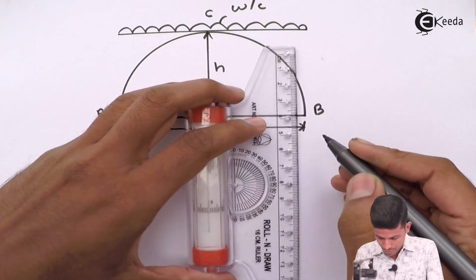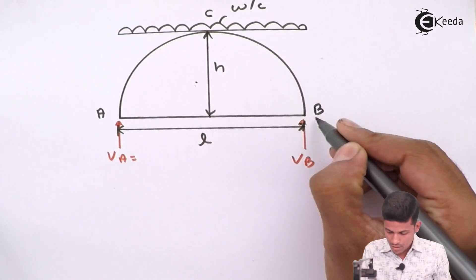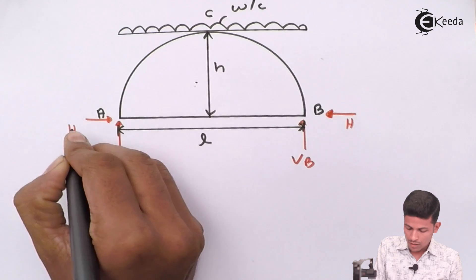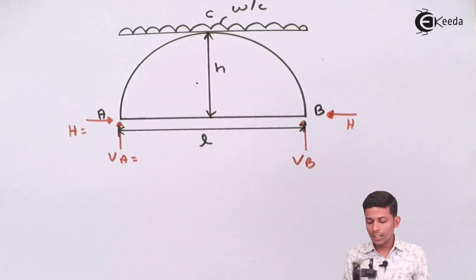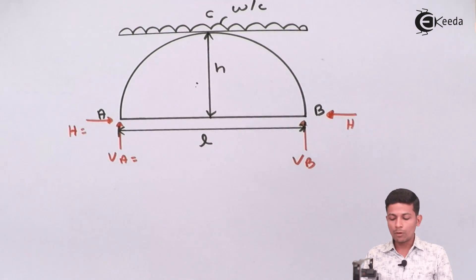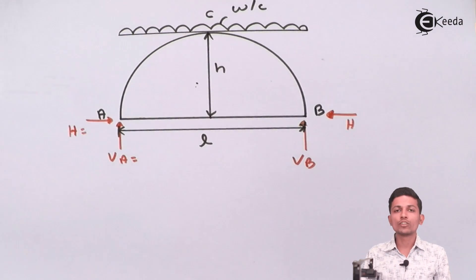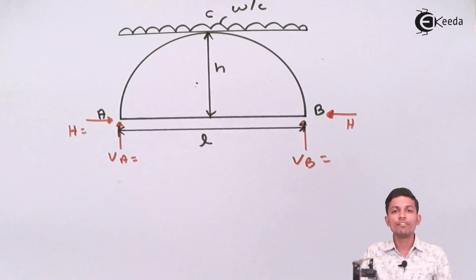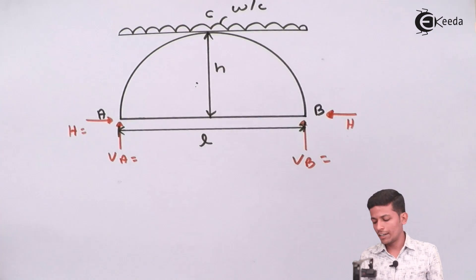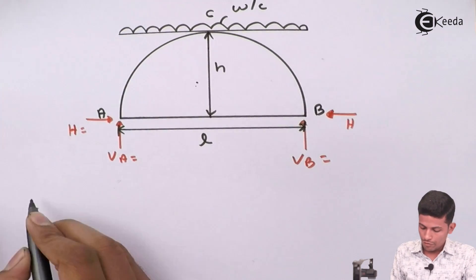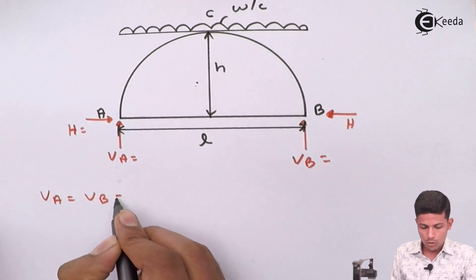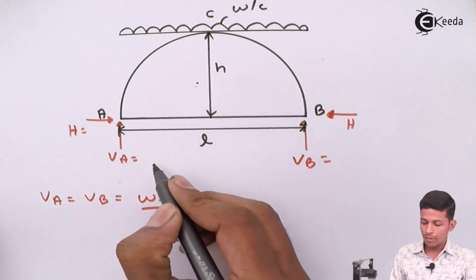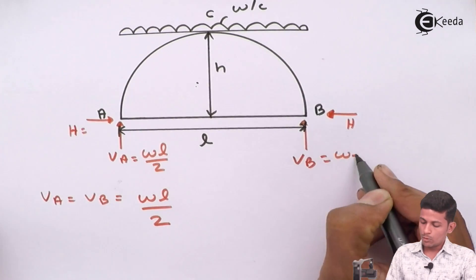We need to find VA, VB, and H. Since this is a symmetrical parabola supported at the same level, and the loading is also symmetrical, we can directly write VA equal to VB equal to WL by 2. Half the total load goes to each support.